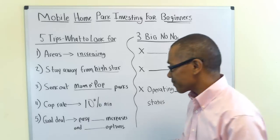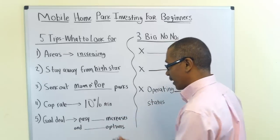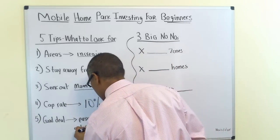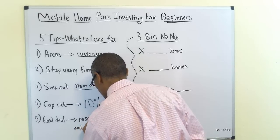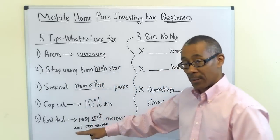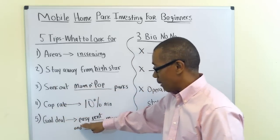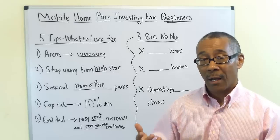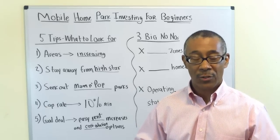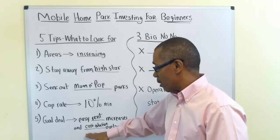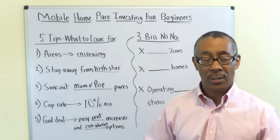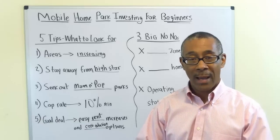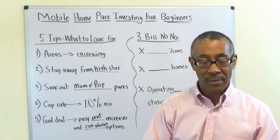Tip five: a good deal means you have easy rent increases and cost reduction options. Going into your deal, I want you to look at places where you can increase rents $10, $15, $20 over the next couple of years. Cost reduction options could be passing some of the utilities over to the residents, or improving some utilities to reduce costs.